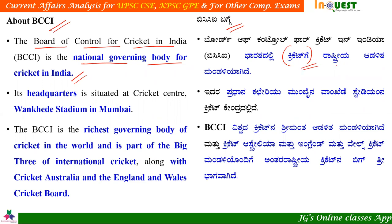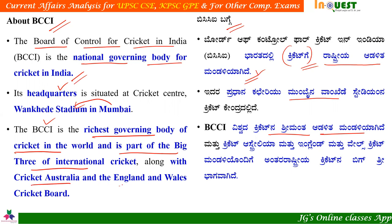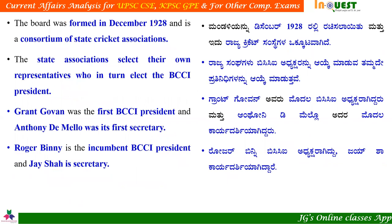BCCI is also called Rastriya Adalitha Mandali. It is part of the Big Three in international cricket along with Cricket Australia and the England and Wales Cricket Board. It was established in 1928 and is a consortium of state cricket associations.